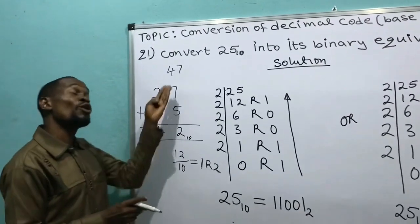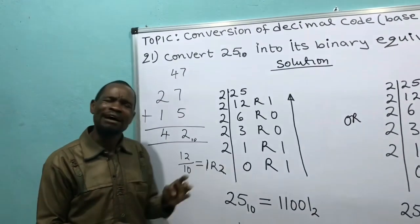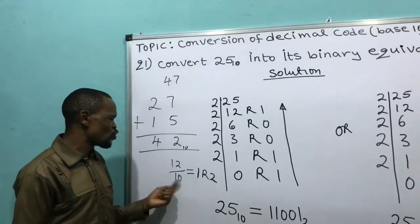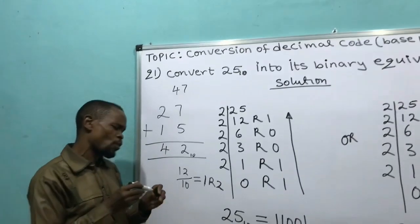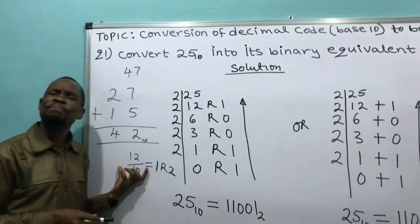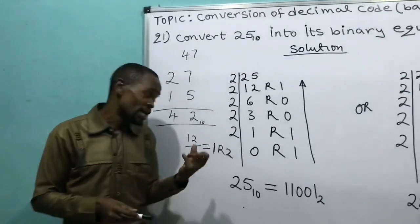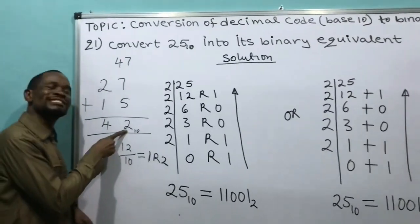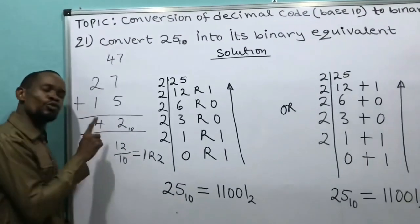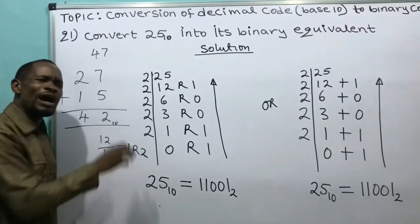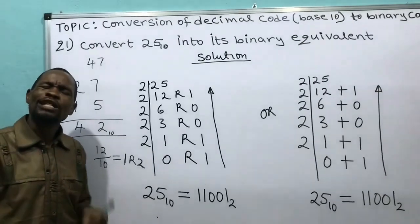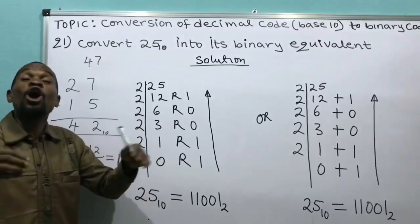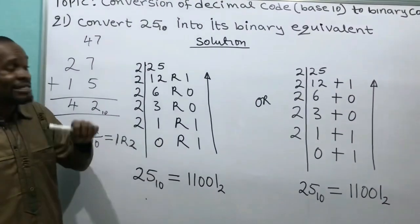Why do we do that? Because we are adding in base 10. That is why when teaching a child, you say: 7 plus 5 gives 12, write 2 and carry 1. You write 2 and carry 1 because you are adding in base 10 — you divide 12 by 10, get quotient 1 remainder 2, write the remainder and carry the quotient. Our day-by-day transactions in multiplication, division, subtraction are all done in base 10.